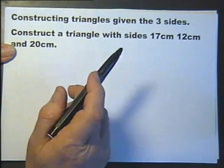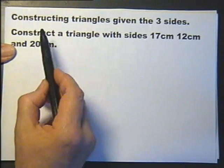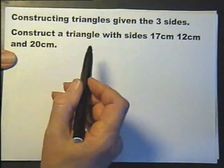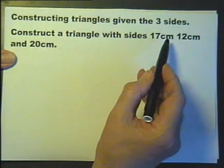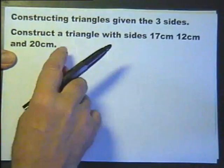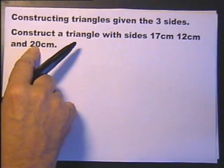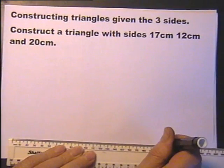So let's consider how to construct triangles given the three sides. We're asked to construct a triangle that's got sides 17 centimeters, 12 centimeters, and 20 centimeters. It doesn't matter which measurement you take to draw first, but usually one draws the longest. So I'll draw a line 20 centimeters long.